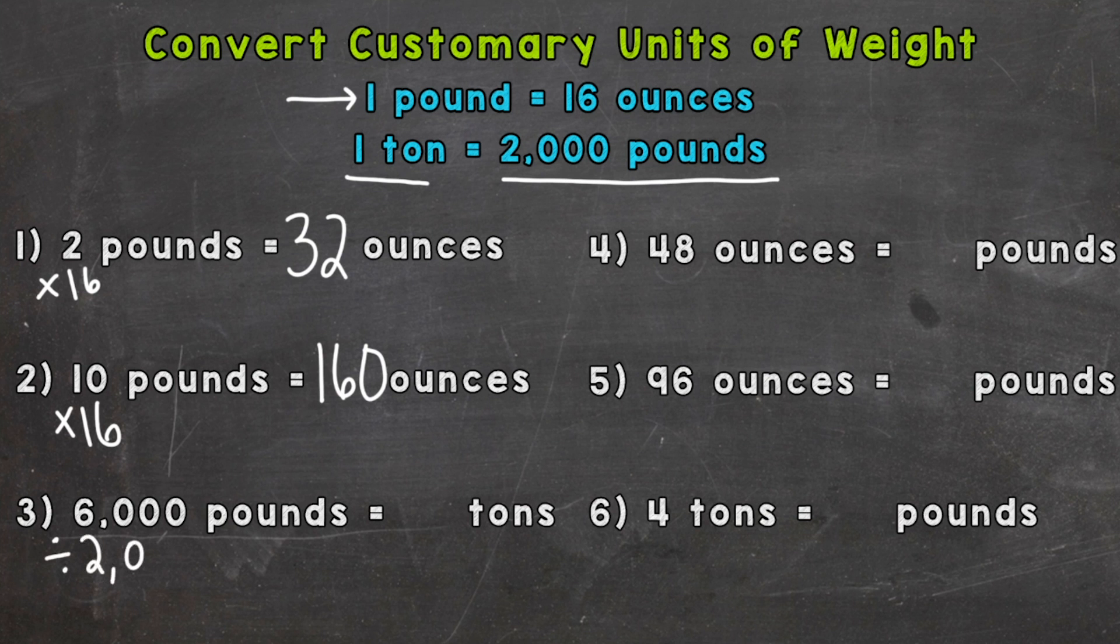And that's going to give us 3. So 2,000 is one ton, plus another 2,000, plus that last 2,000 is three tons.